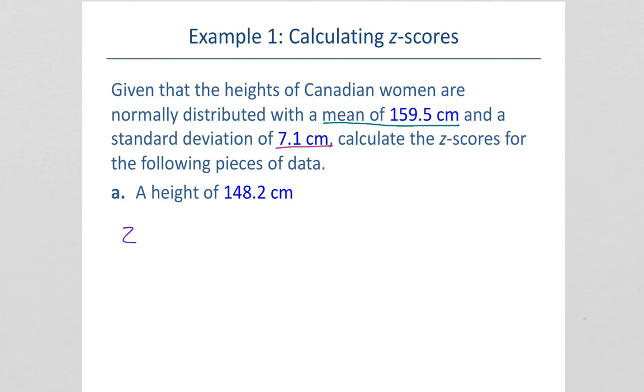For a height of 148.2 centimeters, we would take 148.2, subtract the mean of 159.5, and divide by the standard deviation 7.1.